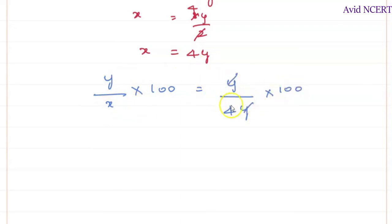So y and y gets cancelled, 100 divided by 4 is 25 times, which equals 25%. So this is the required percentage.